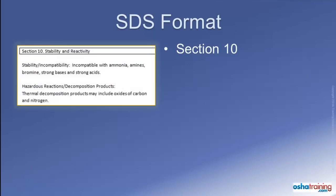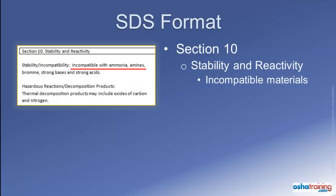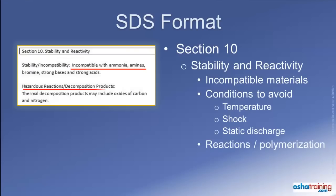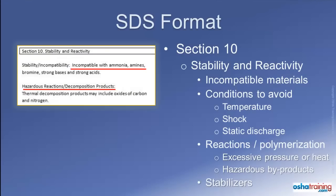Section 10 of a Safety Data Sheet is titled Stability and Reactivity. Here you will find important information identifying any other materials which may be incompatible with the product, as well as any conditions to avoid during storage or handling, such as temperature extremes, shock, and static discharge. There will also be information about any conditions that could cause the chemical to react or polymerize, as this could cause the product to release excessive pressure or heat, or create decomposition products that could be harmful to exposed workers. When applicable, this section will also provide information about stabilizers needed to maintain stability of the product.